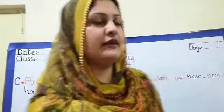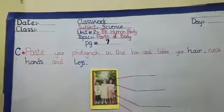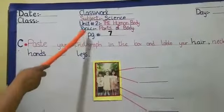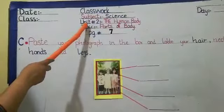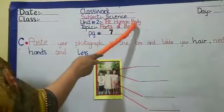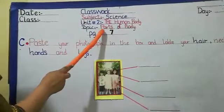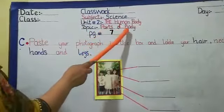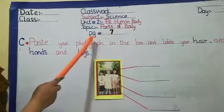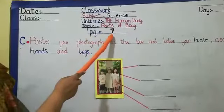Look at the whiteboard. Today we will do unit number 2, the human body. And the topic is parts of body. And the page number is 7.